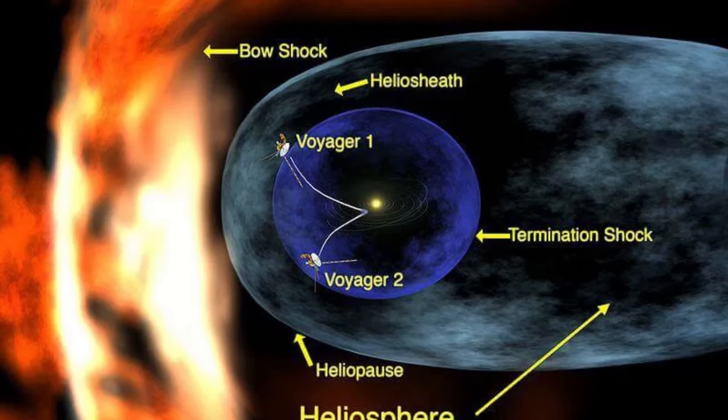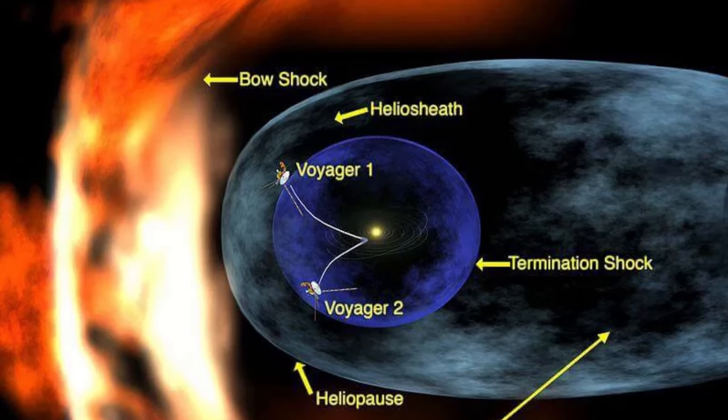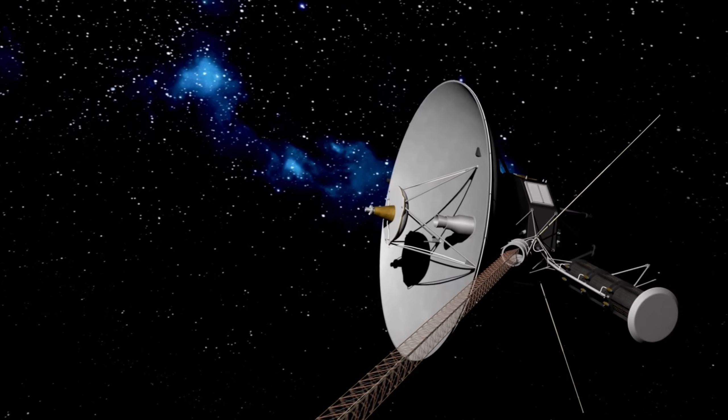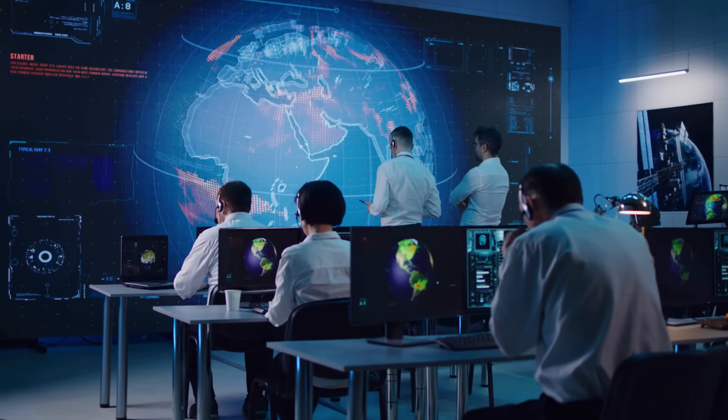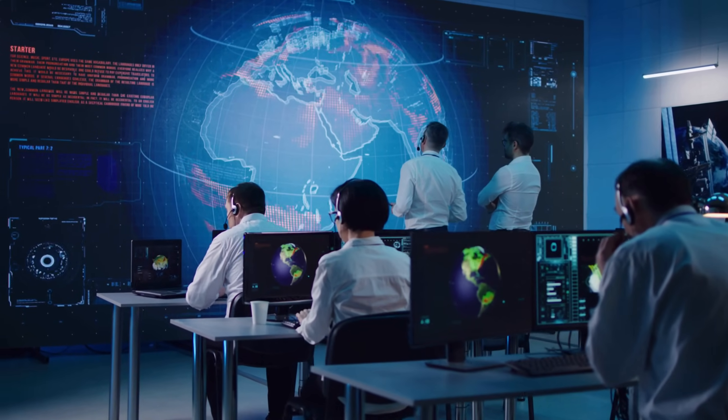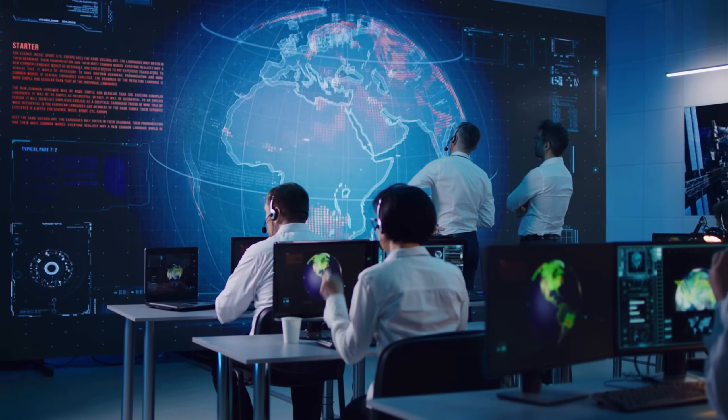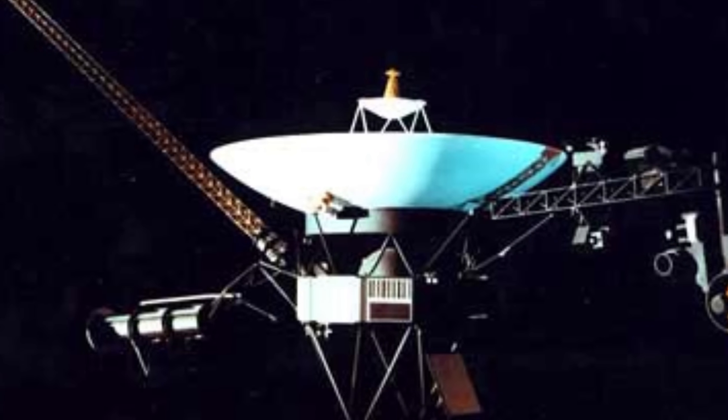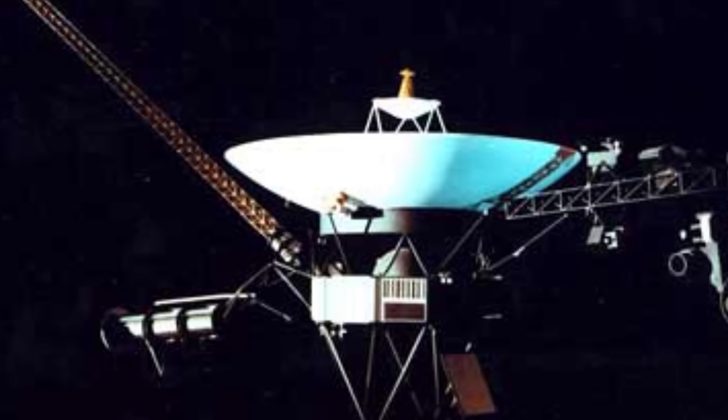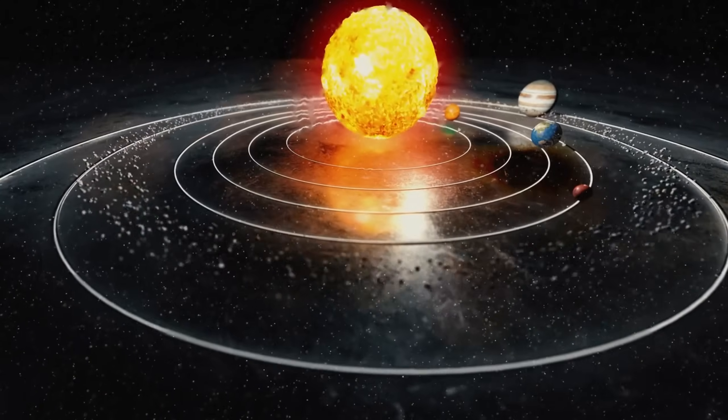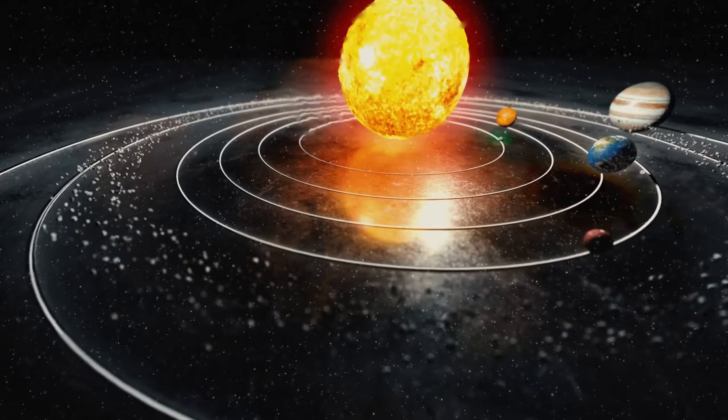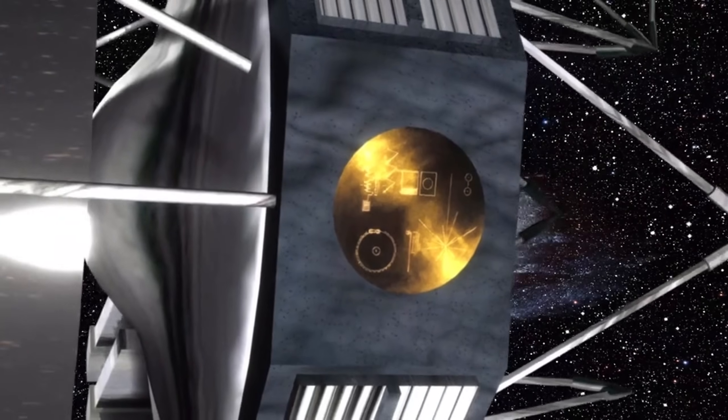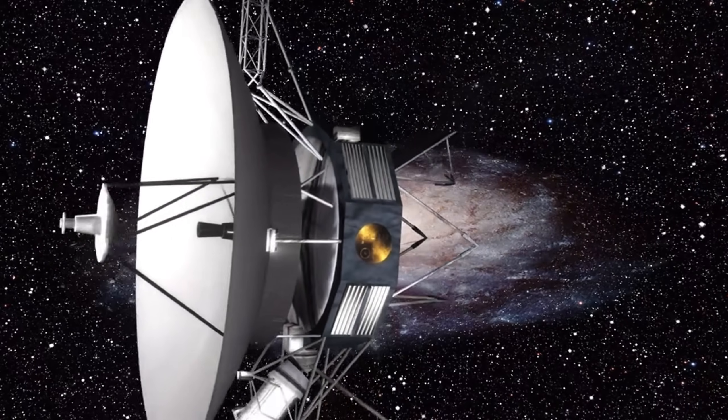The discovery of the heliopause boundary itself was groundbreaking. Voyager's crossing provided the first direct measurements of interstellar space, allowing scientists to better understand the differences between the interstellar medium and the solar bubble surrounding the Sun. Voyager 1 and Voyager 2 have uncovered several bizarre and groundbreaking phenomena throughout their journey, each providing a glimpse into the unknown, from the outer planets to interstellar space. Here are some of the most extraordinary discoveries Voyager has made to date.